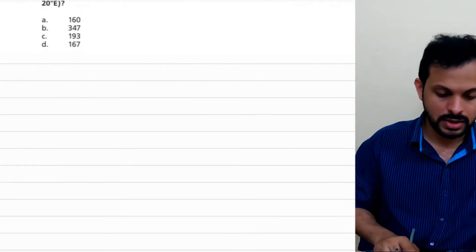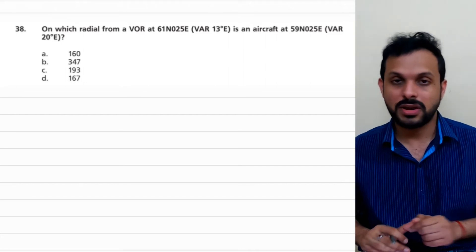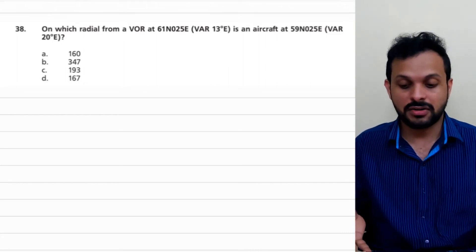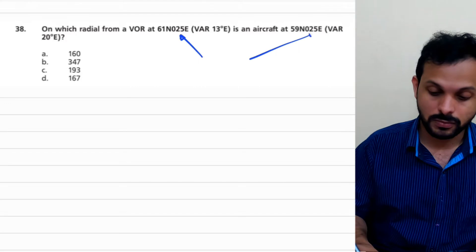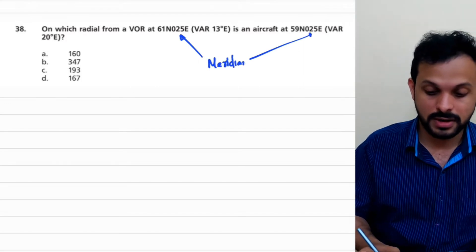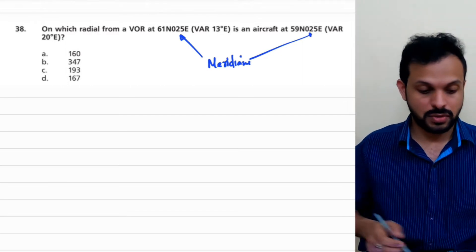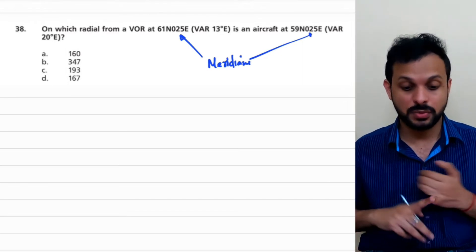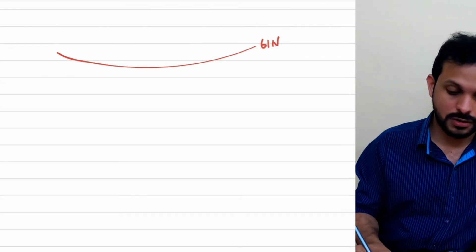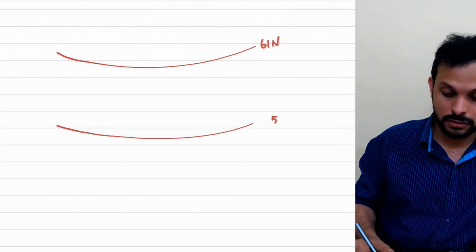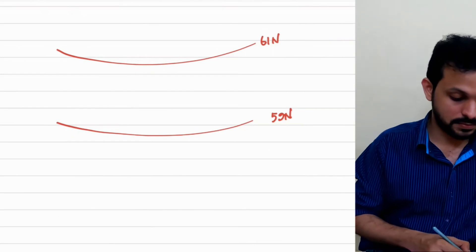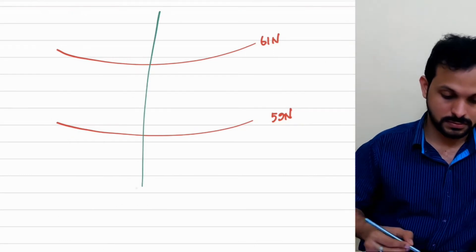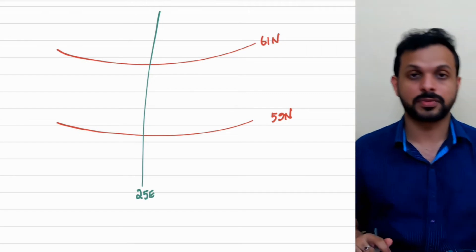Let's draw a figure. Let's draw the location of VOR. 61 north and 25 east. So basically both, you can see, VOR and the aircraft are in the northern hemisphere and they have the same meridian. Their longitude values are same and hence they are on the same meridian. Let's draw a meridian of 25 degrees east and let's draw the parallels of latitude 61 north and 59 north. So northern hemisphere 61 north and therefore 59 north is obviously south of it.